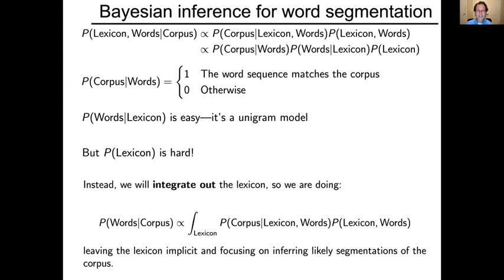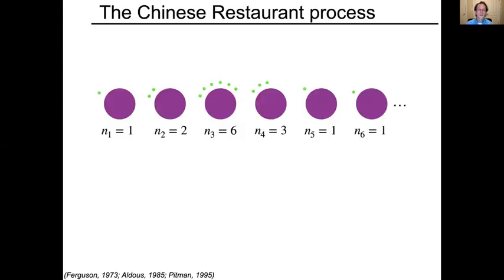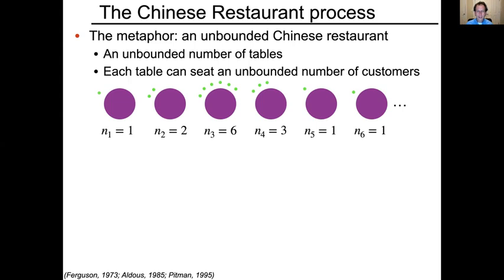The harder part is the probability distribution over possible lexicons. In practice, what we're going to do is integrate out the lexicon, getting the probability of the words given the corpus as the marginal probability over all possible lexicons of the corpus given the lexicon, the words, times the prior probability of lexicon and words. To do this, we're going to use what's called the Chinese Restaurant Process — a name that came from mathematical probability in the 70s and 80s and made its way into the Bayesian statistical literature in the 2000s.